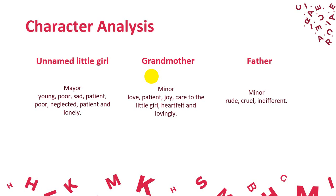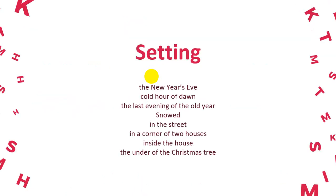The last character is the father, who is also a minor character like the grandmother — he is just a side character without much dialogue in this story. The father has traits of being rude, cruel, and indifferent. Then there is the setting. The setting of time is New Year's Eve, the cold hour of dawn, and the last evening of the old year, also during a snowy night. The setting of place is in the corner of the house, inside the house, and under the Christmas tree.